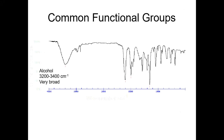This is the core of the discussion — different functional groups and their IR stretches that every student in organic chemistry should know, not just for class but for standardized exams. The alcohol O-H stretch is a broad stretch between 3200 and 3400 wavenumbers.